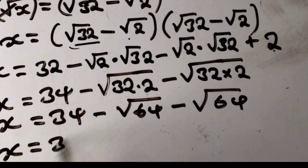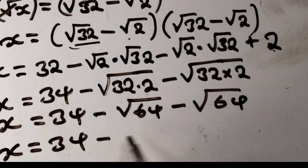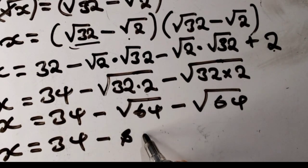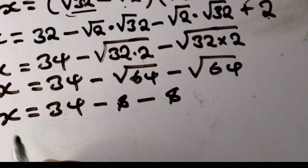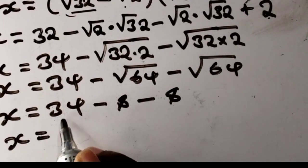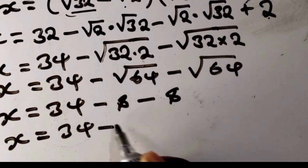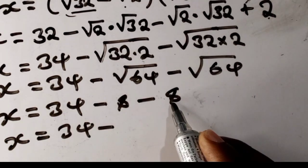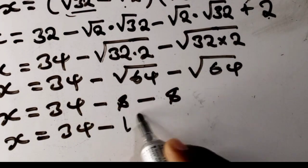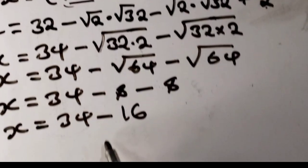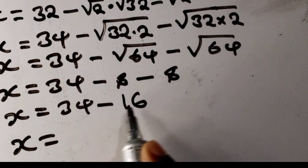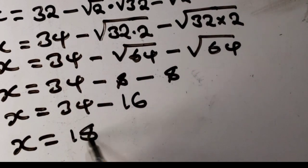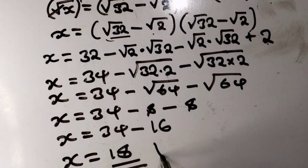Root 64 is 8, and we have minus 8 minus 8 which is minus 16. So x equals 34 minus 16, which equals 18. So this is our value for x for this question.